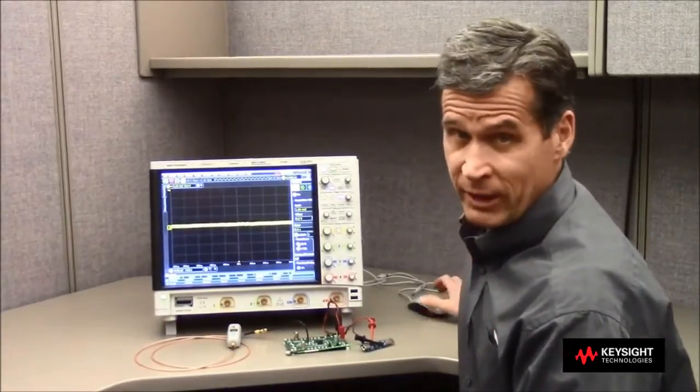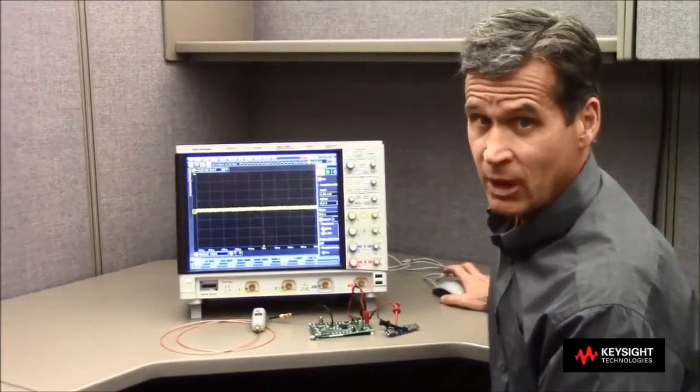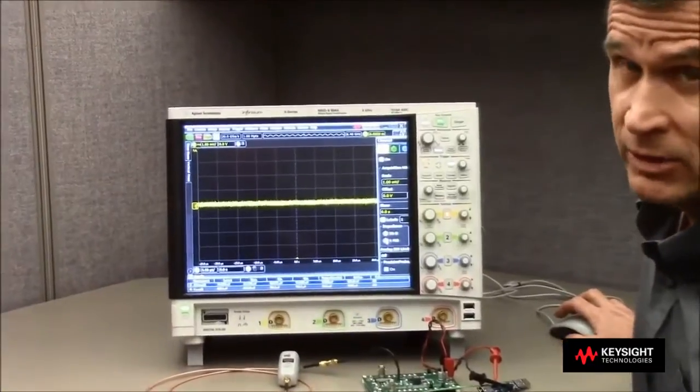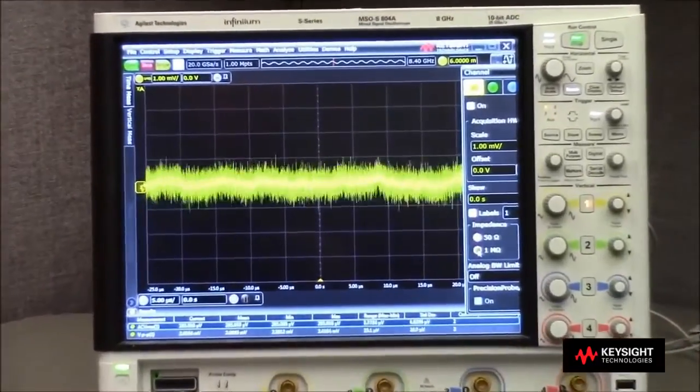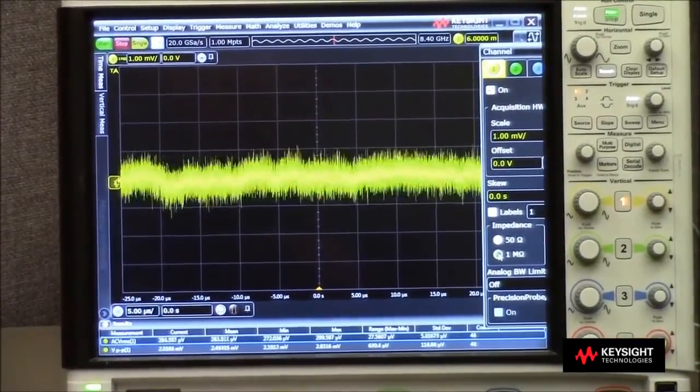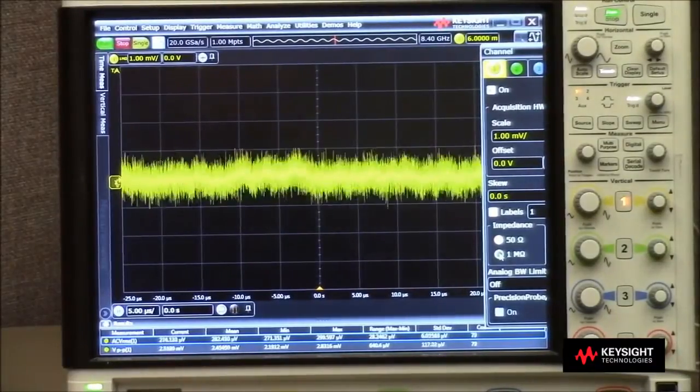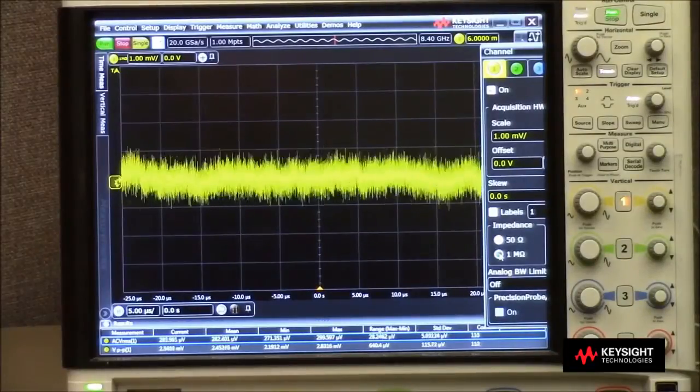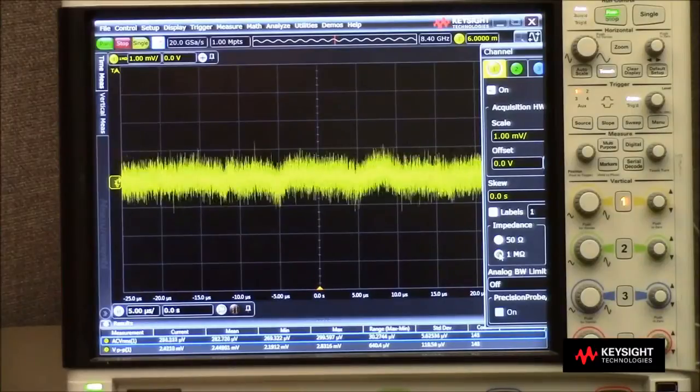What I've done is I've got the scope just in maximum sensitivity on 50 ohms. I'm going to go ahead and I'm going to change it to one mega ohm and you'll be able to see the trace get fatter and you'll also be able to see the measurements jump up. That's what happens when you're using the one mega ohm path.